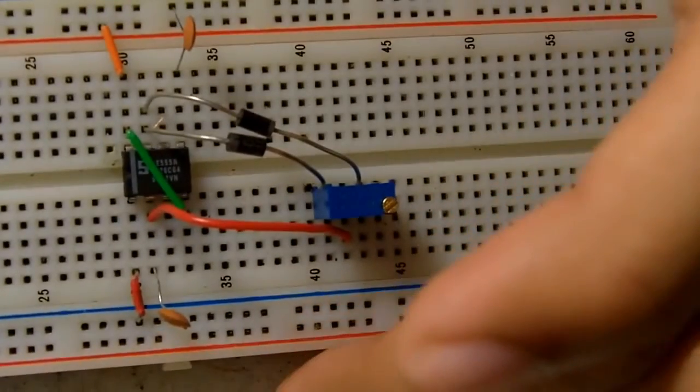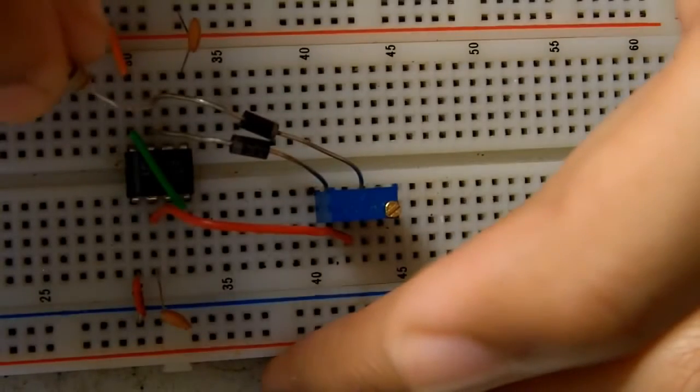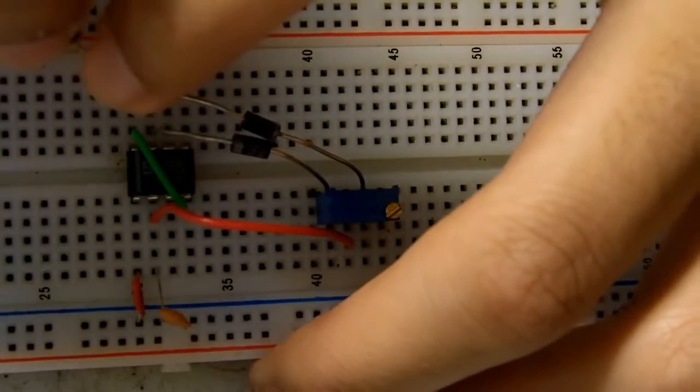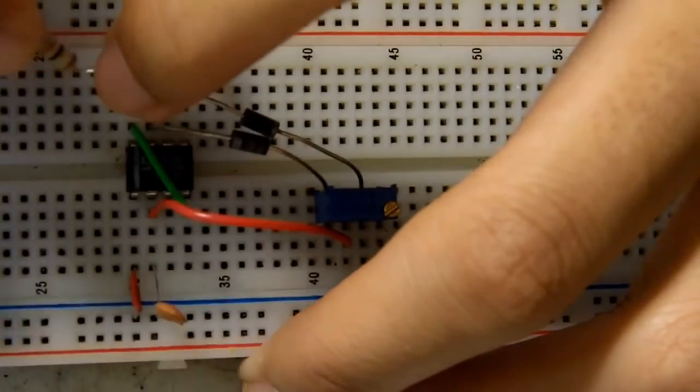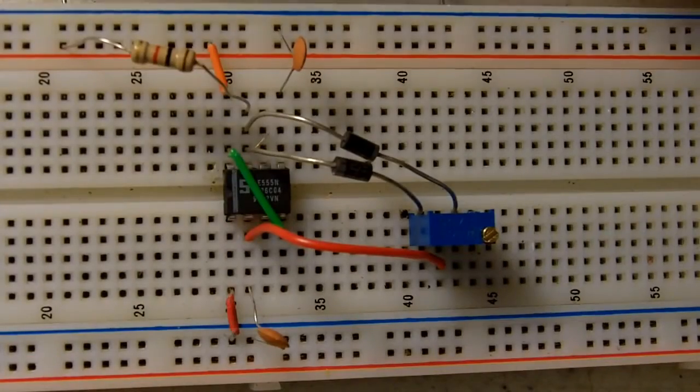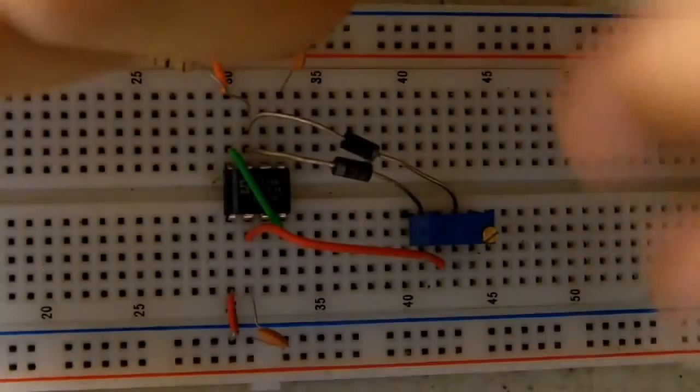Connect pin seven to positive with a 1k resistor. Connect the middle of the potentiometer to pin six.